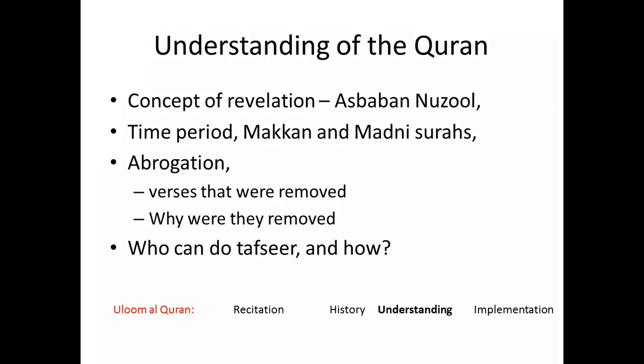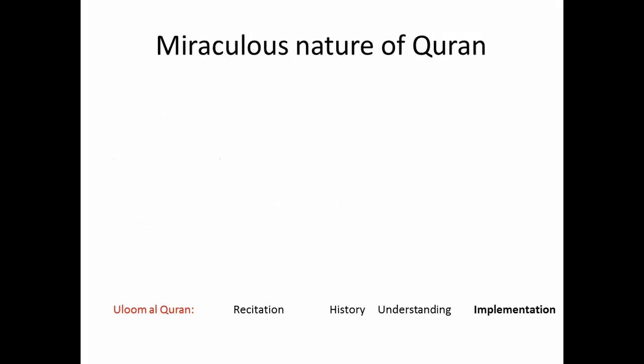Abrogation is a very important area in Uloom Al-Qur'an. There were certain verses that were removed — why were they removed, what was the reason? Plus, who can do tafsir and how is the tafsir done? All of these aspects we're going to understand.